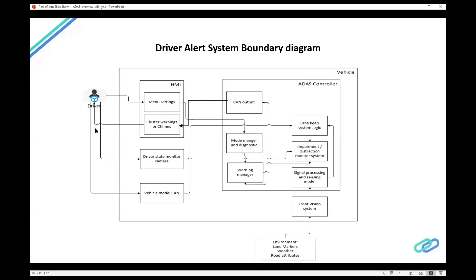The driver input consists of the driver state monitoring camera data and the lane behavior of the driver — how well the driver is following the lanes. In the future there will be more modifications: for example, if the driver is distracted, the navigation system could automatically search for the nearest rest area or coffee shop and send that information to the navigation route. With more robust connectivity and internet systems, these kinds of capabilities can be realized.